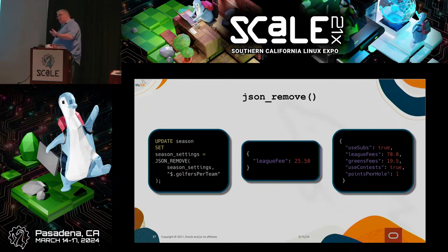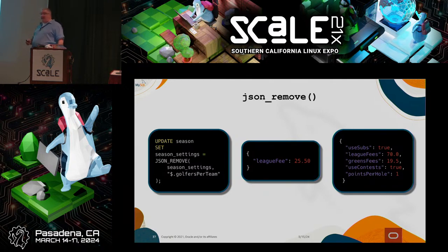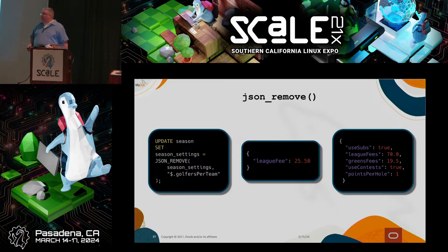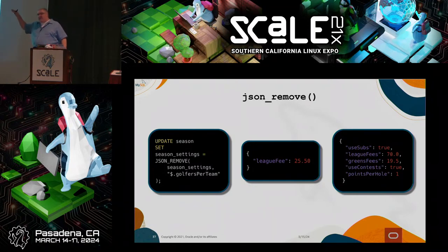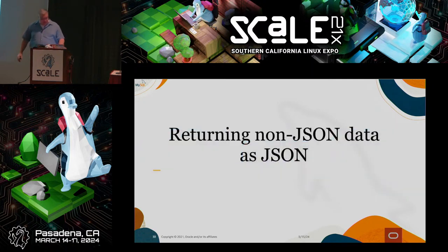We can remove properties from a JSON object using JSON_REMOVE, where the first argument is the column name and the second is the path to the property we want to remove. After running it, golfers_per_team is removed from all rows. When doing update statements like this, you don't have to do global updates — you can add a WHERE clause. I just didn't for the sake of this demonstration.